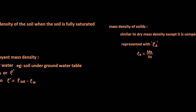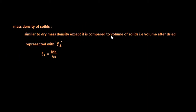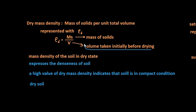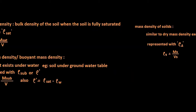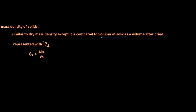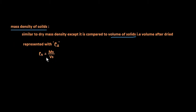Mass density of solids is similar to dry mass density except that here the mass is compared to volume of solids rather than total volume. From the beginning I have been saying 'volume taken initially before drying' every time — except here, for mass density of solids, only the volume of solids is used.